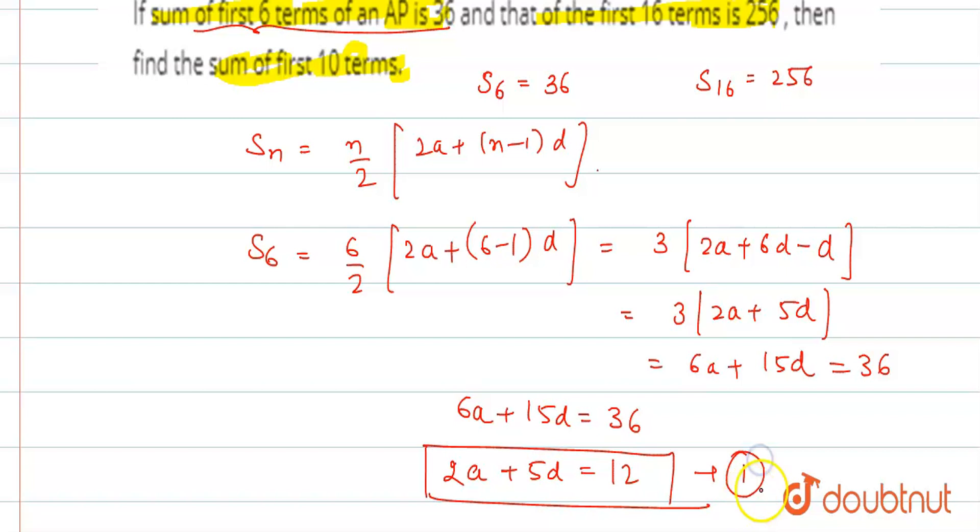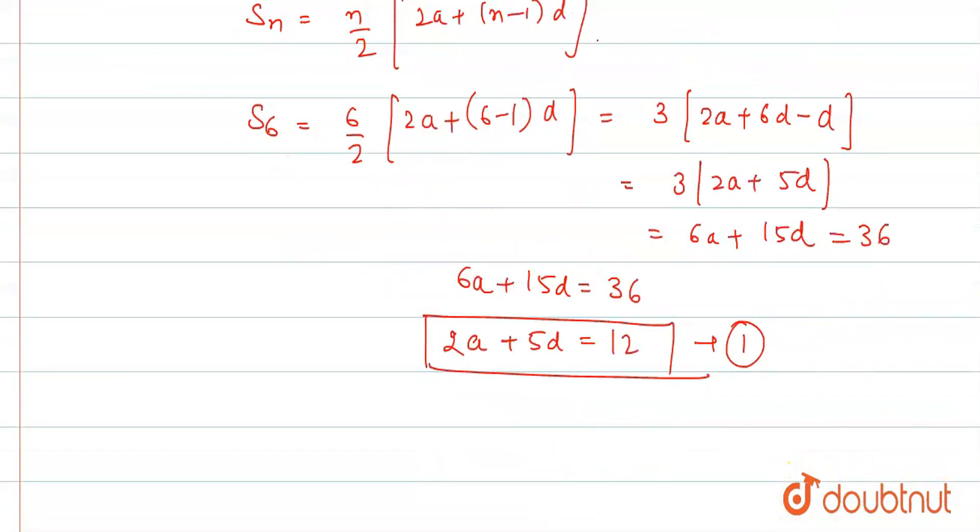Now, we have S16 is 256. So, if we take the sum of S16 and put it in this formula: 16 by 2, 2a plus n minus 1 times d. This is 8 times 2a plus 16 minus 1 is 15d. This equals 256.